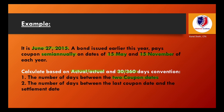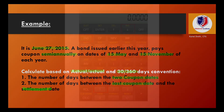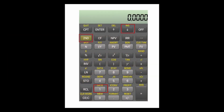To solve this in the calculator, we require the date function, which you access by pressing Second and then the Date key — that's Second and 1. We'll input the details and press the down arrow key to get our answer.